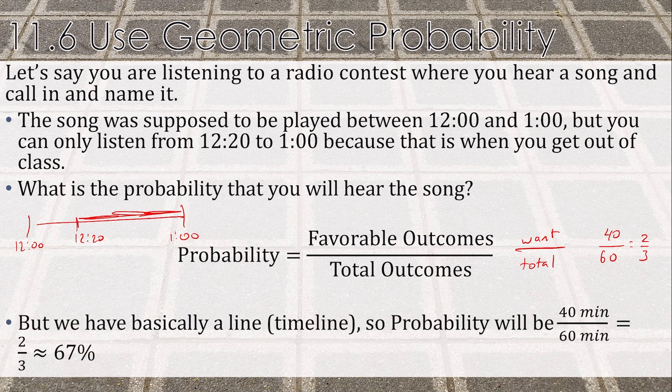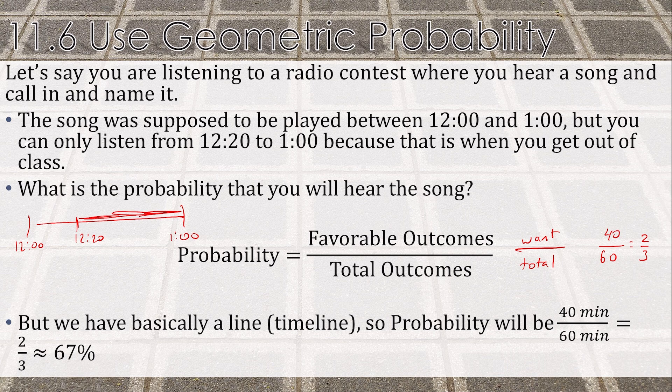So it's a timeline, the line segment probability: 40 over 60, two-thirds, or 67%.